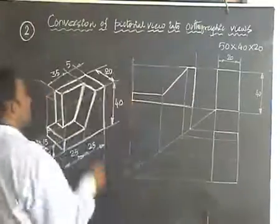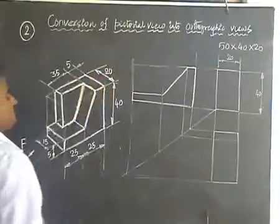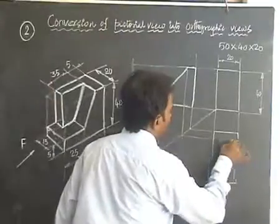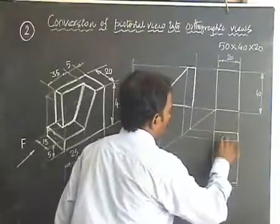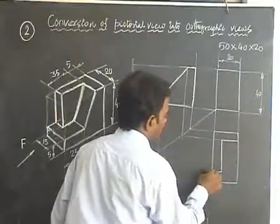Now look at the top view. This 5 moment L shape is visible. So place that L shape here on the top view. Go till you reach 40mm. Stop it here.